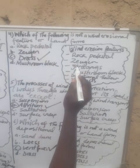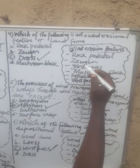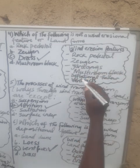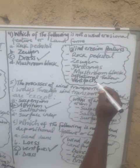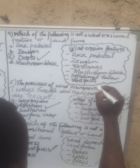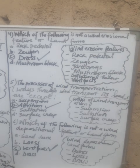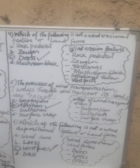Coming back to question number four, when we looked at wind erosion features, we had rock pedestals, zeugen, yardangs, mushroom blocks, deflation hollows, and ventifacts. So ventifacts is a wind erosion feature, not a wind deposition feature — that's why the correct answer for question six is C, ventifacts. Thank you very much for watching this video. Don't forget to subscribe!